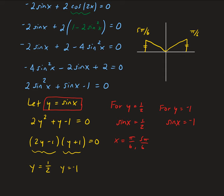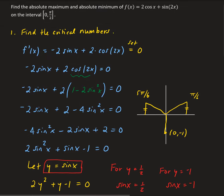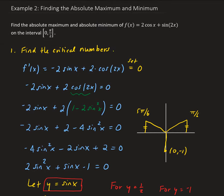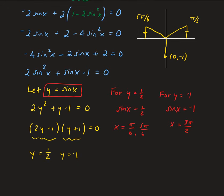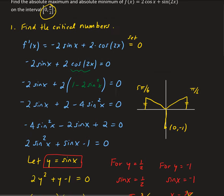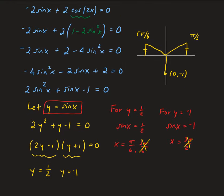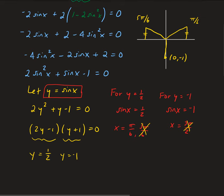For y = -1, we have sin(x) = -1, which occurs at x = 3π/2. However, remember we're on a restricted domain from 0 to π/2. The values 5π/6 and 3π/2 are outside that interval, so the only critical number we need is x = π/6.